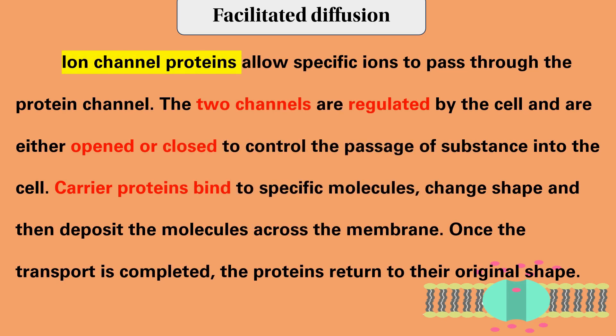Ion-channel proteins allow specific ions such as sodium ion, potassium ion, chloride, and calcium to pass through. Ion-channel proteins are specific to a particular ion — for example, a chloride channel allows only chloride ions.